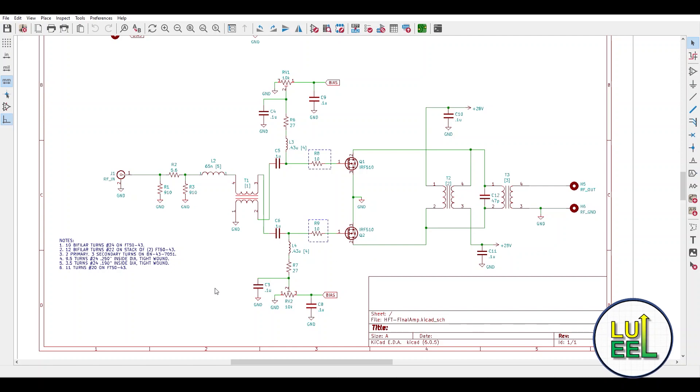I already went through the final amp design and board layout back in episode number 8, but as a quick one-sentence summary, I'm using a commonly built design based around two IRF-510 MOSFETs connected in push-pull mode. When supplied with 28 volts DC power, it's capable of between 10 and 30 watts output on the amateur HF bands.